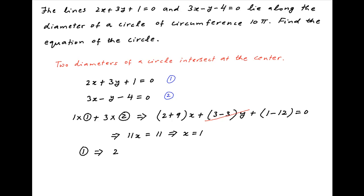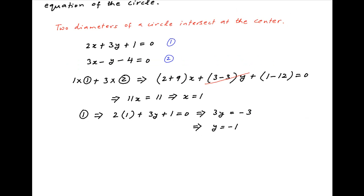Using this in the first equation, we get 2 times 1 plus 3y plus 1 equals 0 which implies that 3y equals minus 3 or y equals minus 1. Therefore the center of the circle has the coordinates (1, -1).